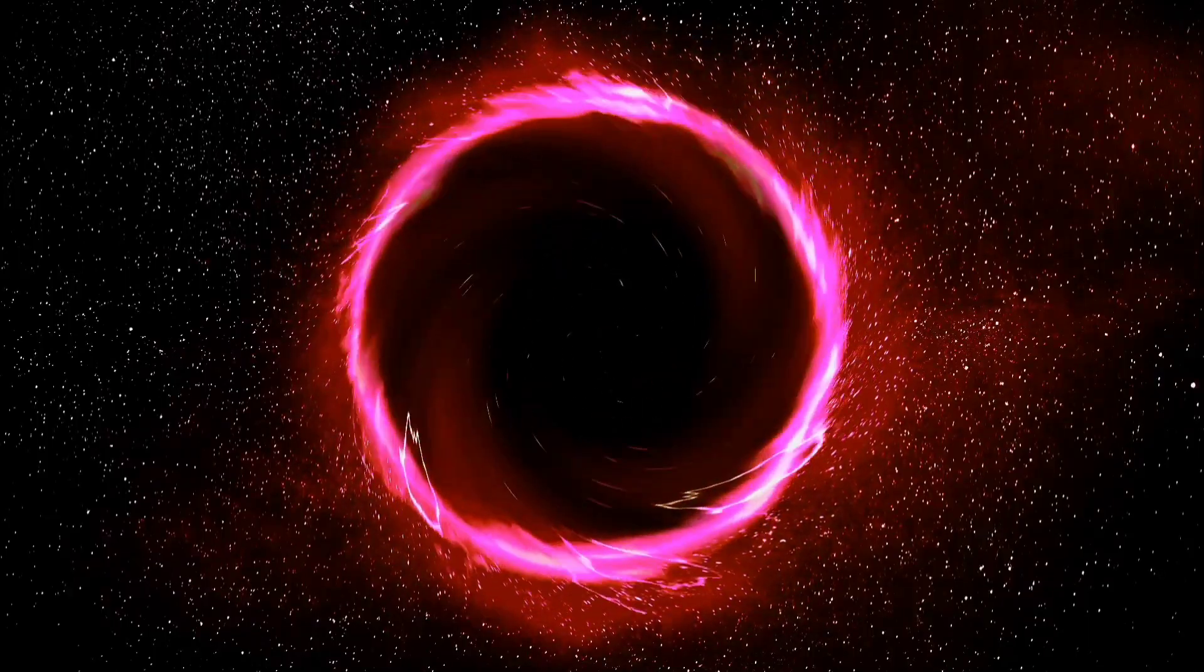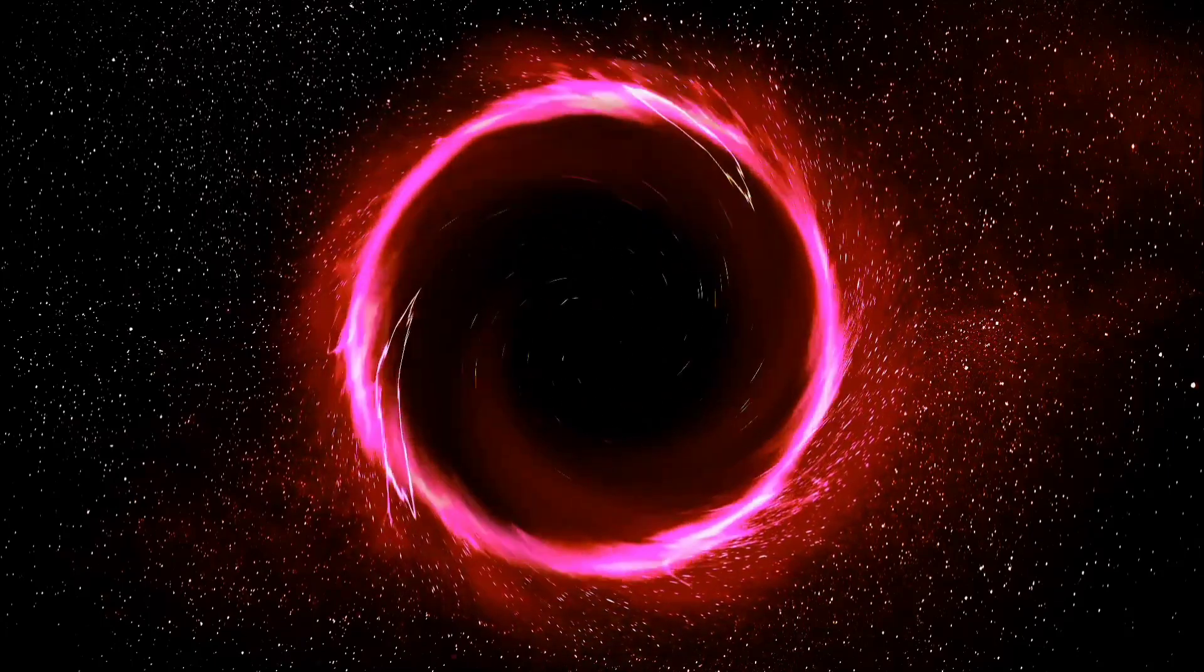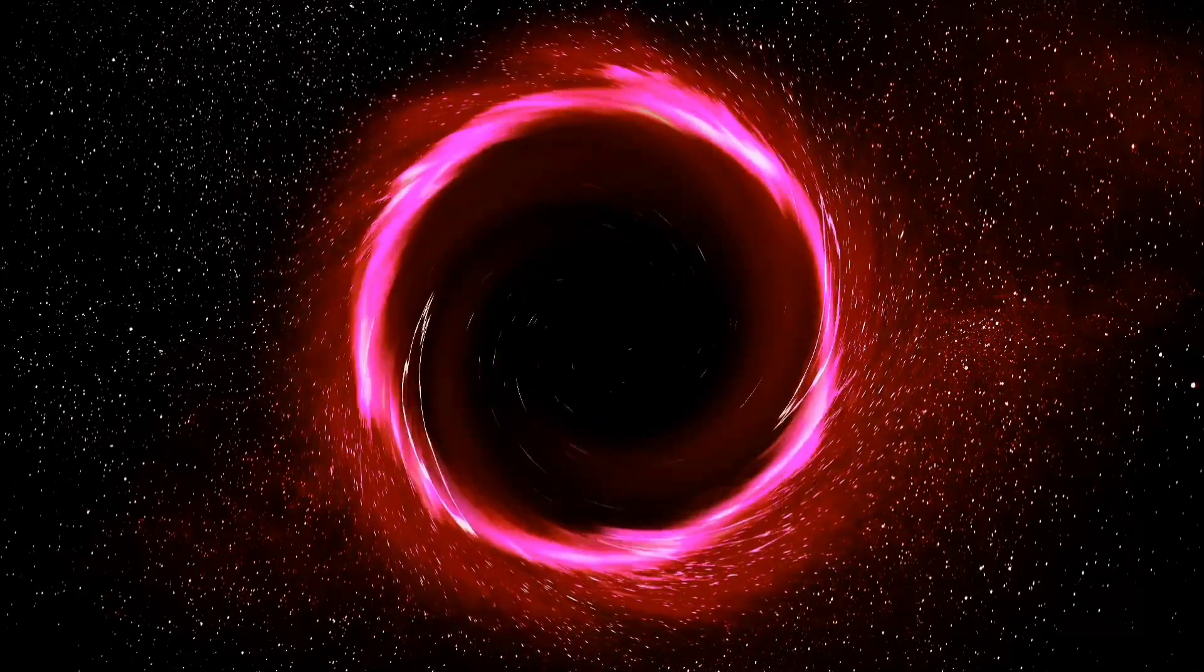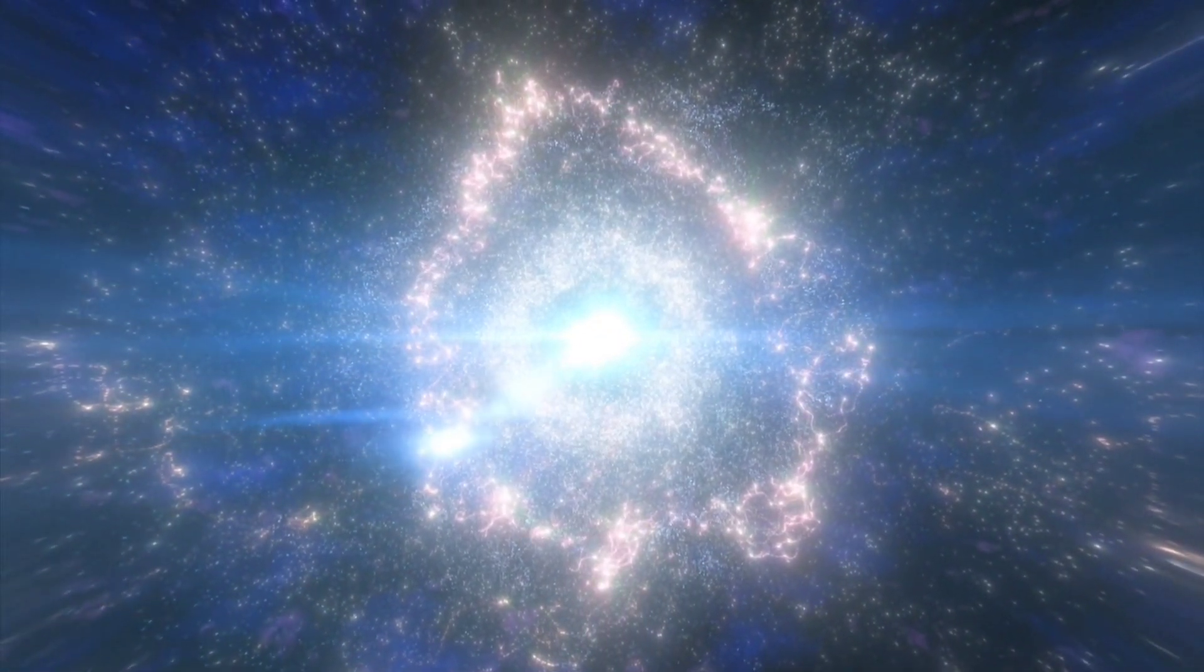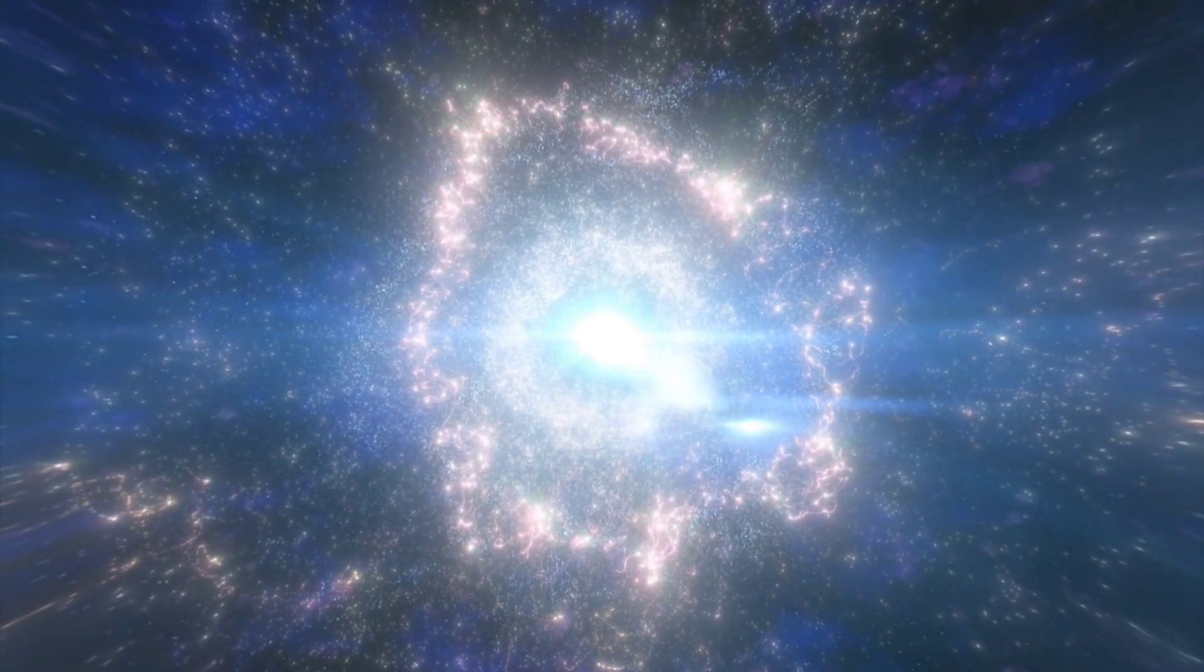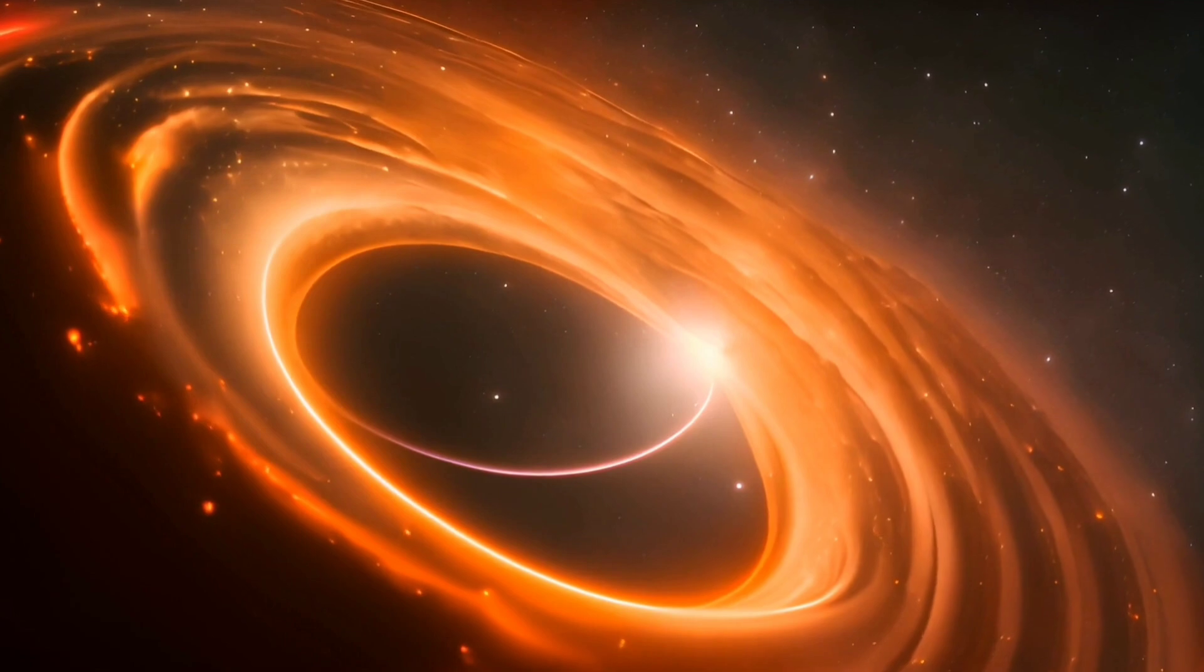This finding is set to fundamentally change our understanding of the formation and evolution of the universe. Just 700 million years after the Big Bang, when the universe was still in its infancy, this black hole, named J1007-2115, was expelling gas and dust at an incredible rate, completely halting star formation within its galaxy.